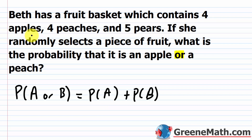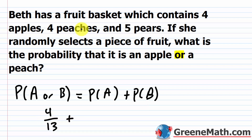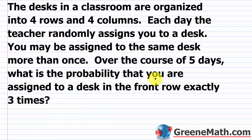The probability of picking an apple is four out of four plus four plus five, which is four over 13. The probability of picking a peach is also four over 13. Adding them together gives eight over 13. That's the probability of selecting an apple or a peach from Beth's fruit basket.